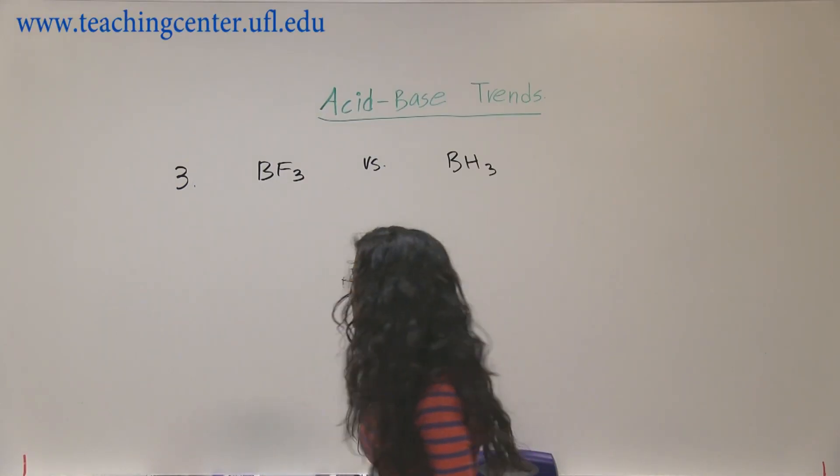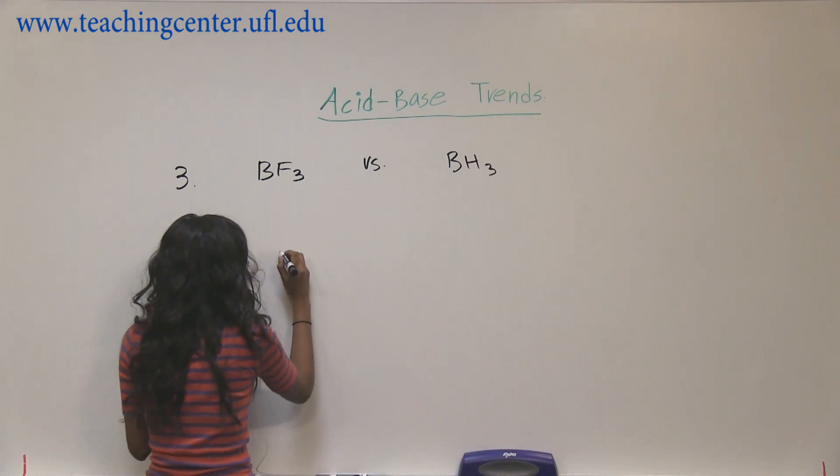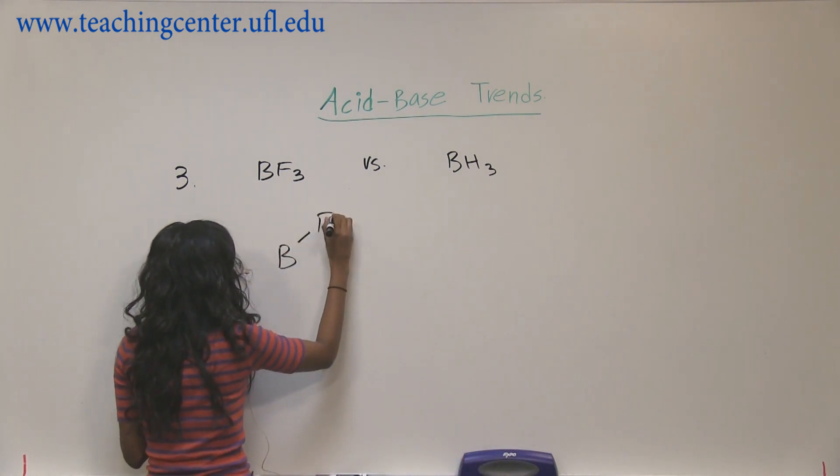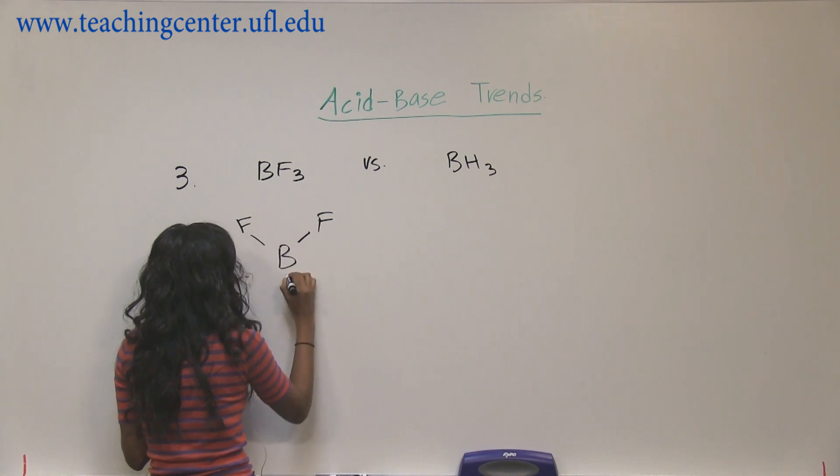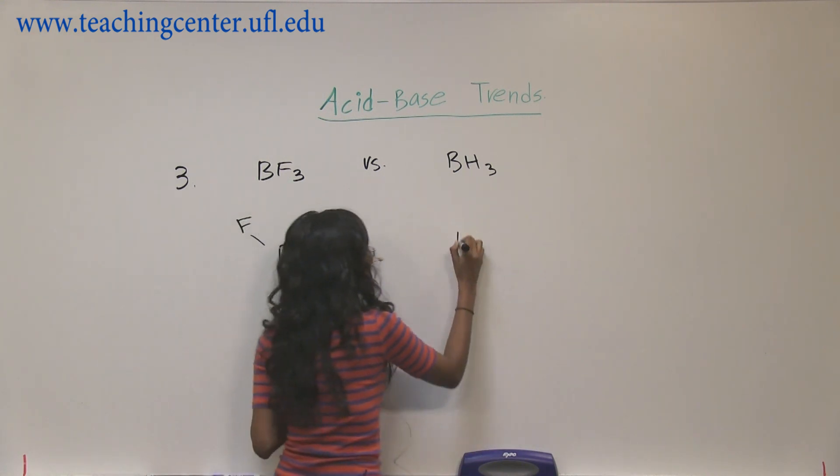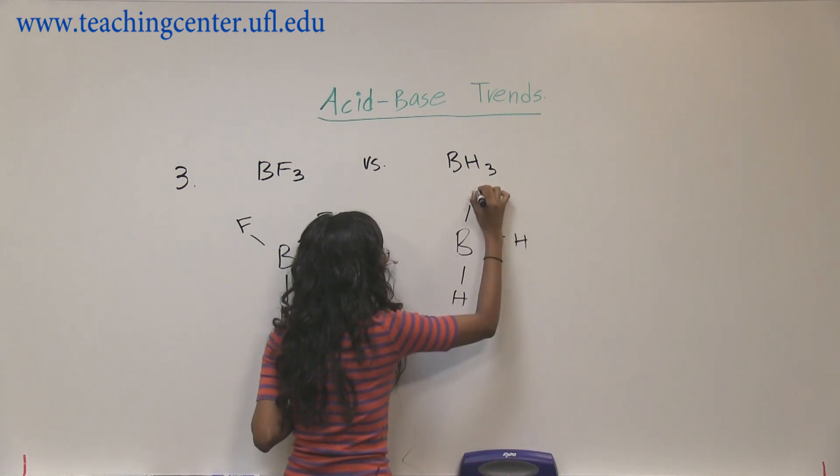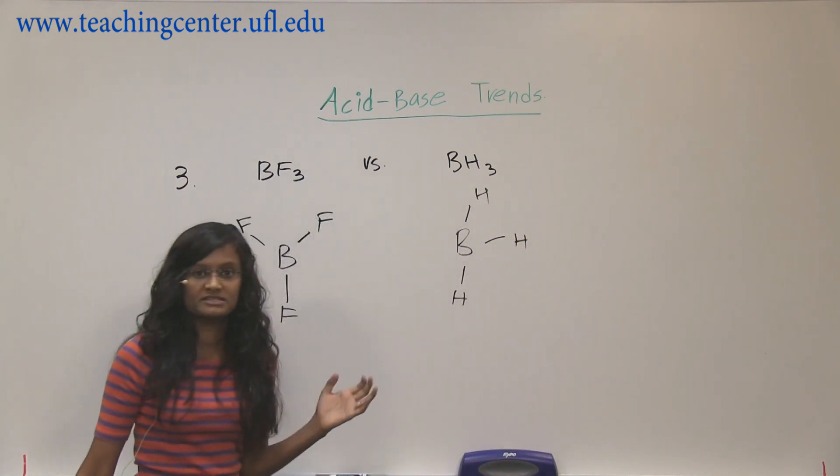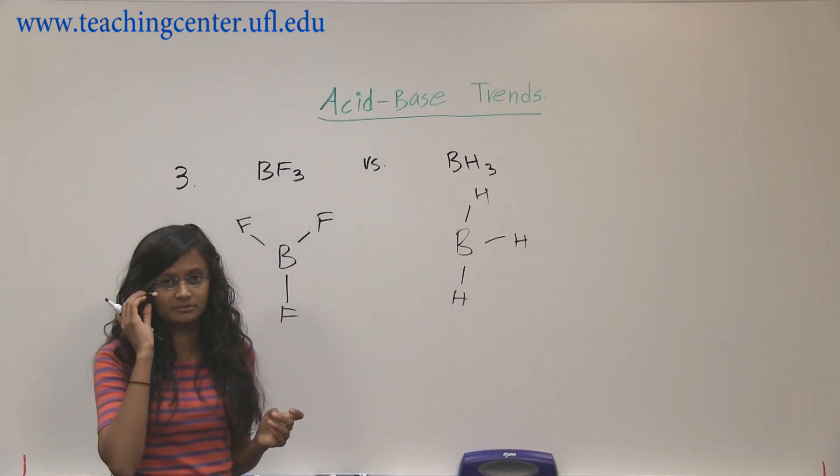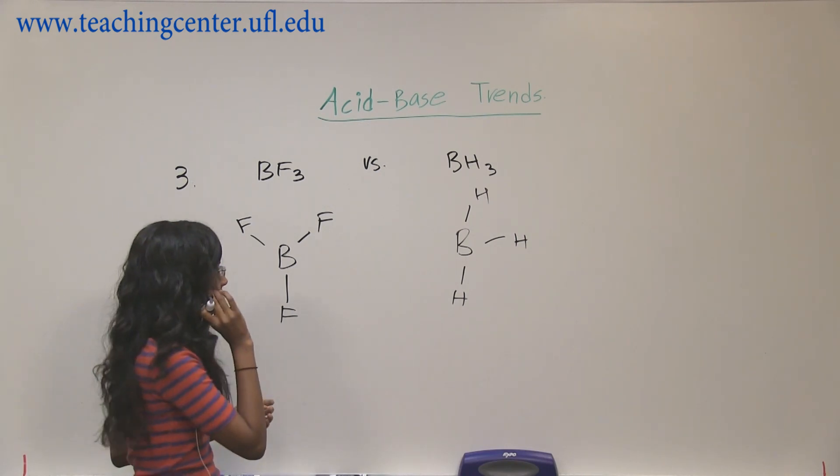So the next example is BF3 and BH3. This one is a little different than the others because these are Lewis acids, not Bronsted-Lowry.